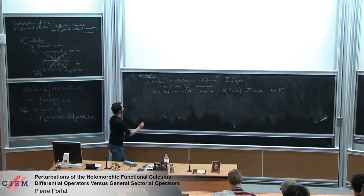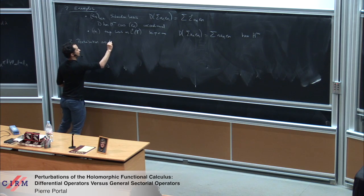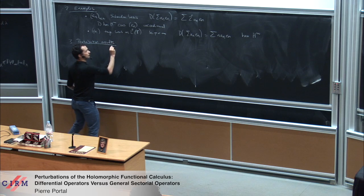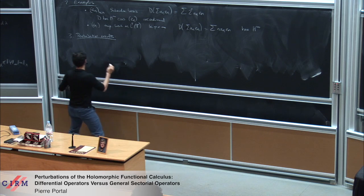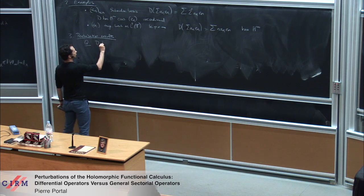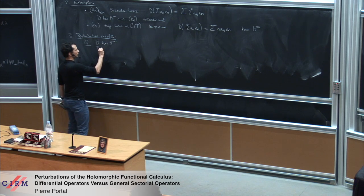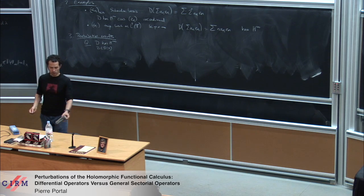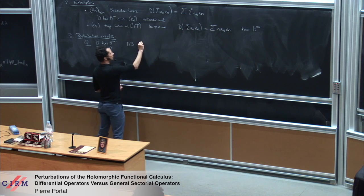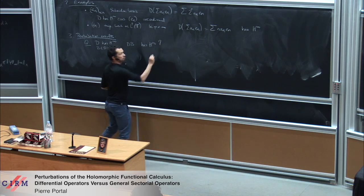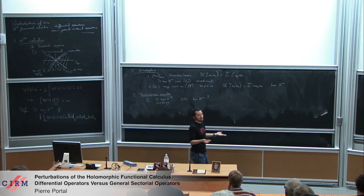Perturbation results. The very natural question in operator theory is: start with an operator that has a bounded holomorphic functional calculus, take a bounded operator B, and try to find conditions on B such that the product D times B still has an H∞ functional calculus — perhaps for B a small perturbation of the identity.